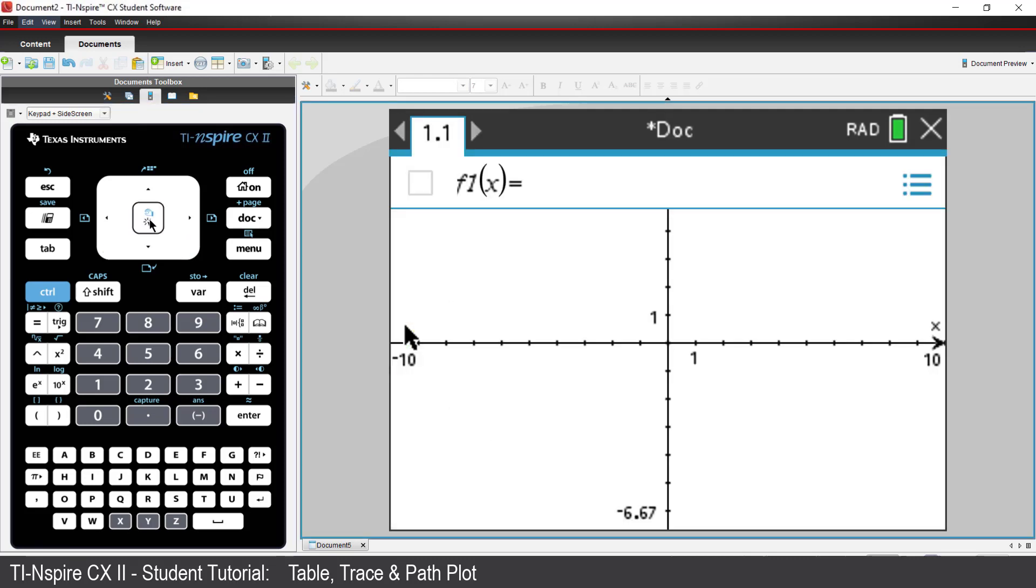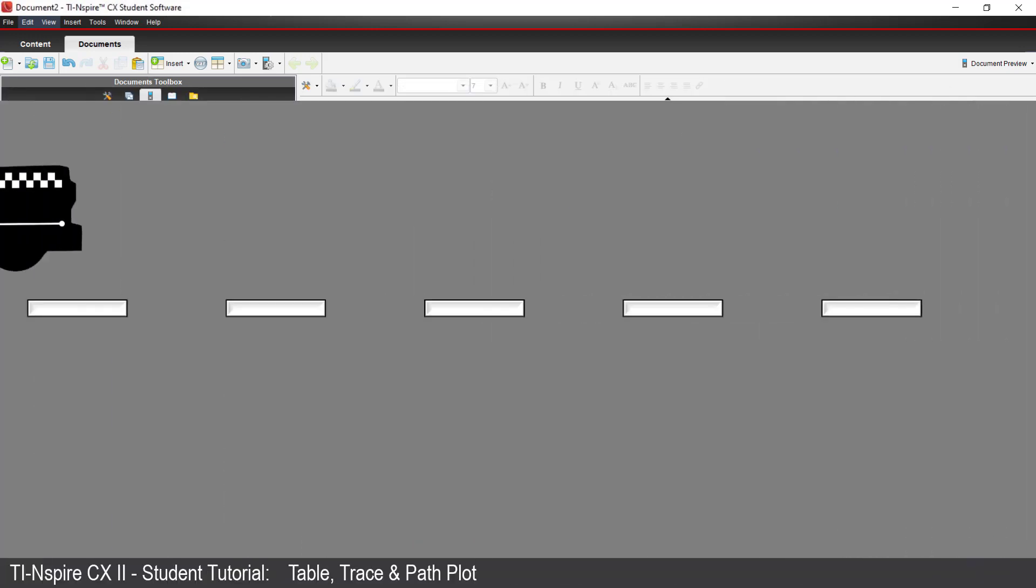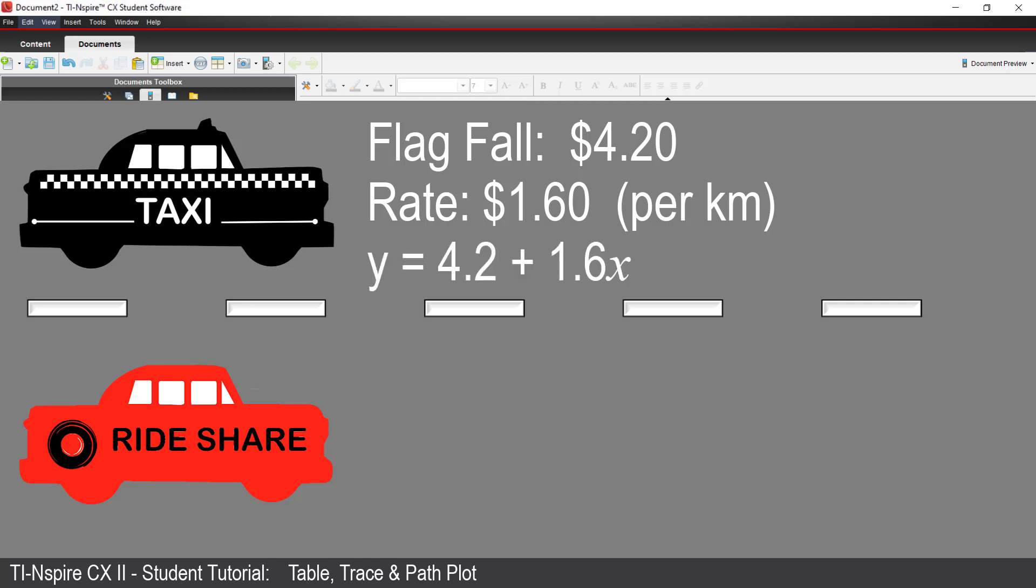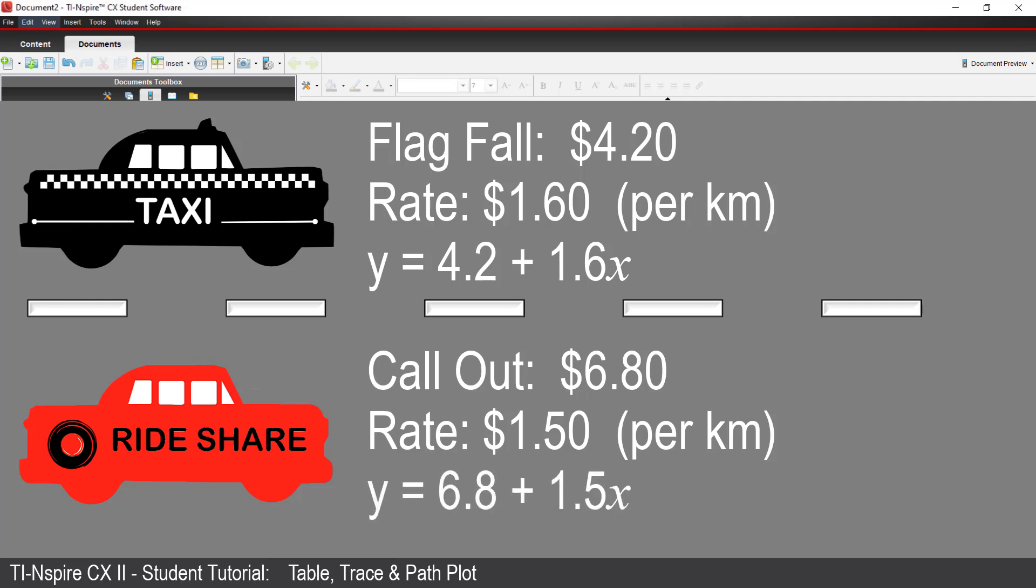A suitable context for the Table option is to compare taxi and rideshare costs. Suppose a taxi has a flag fall of $4.20 plus $1.60 per kilometre. The equation for the taxi fare would be y equals 4.2 plus 1.6x. A rideshare company has a call-out fee of $6.80 and $1.50 per kilometre. The rideshare equation would be y equals 6.8 plus 1.5x.